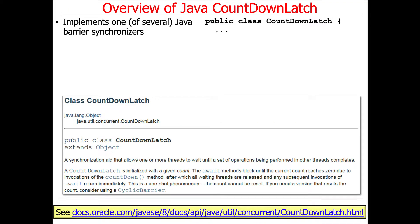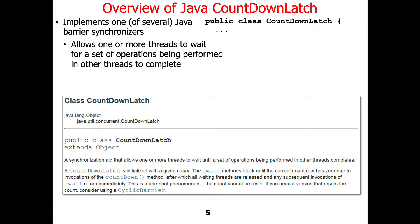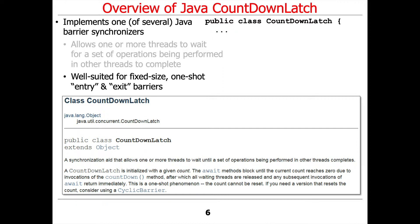Java's CountDownLatch class implements one of several Java barrier synchronizers. This synchronizer allows one or more threads to wait for a set of operations being performed in other threads to complete. It's most suited for fixed size, one-shot, entry, and exit barriers.